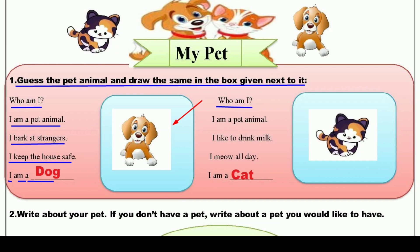پھر Who am I? میں کون ہوں؟ I am a pet animal — میں ایک پالتو جانور ہوں۔ And I like to drink milk — مجھے milk پینا بہت پسند ہے۔ I meow all the day — میں سارے دن meow کرتی ہوں۔ تو کون ہوں میں؟ So I am a cat. میں ایک بلی ہوں۔